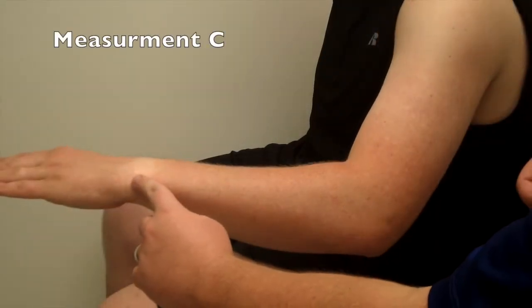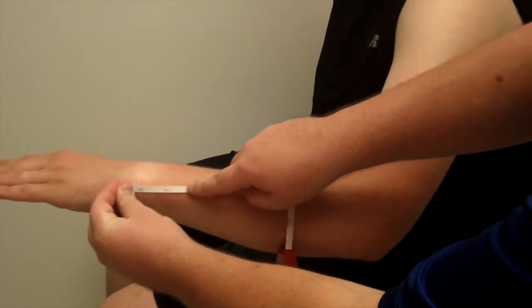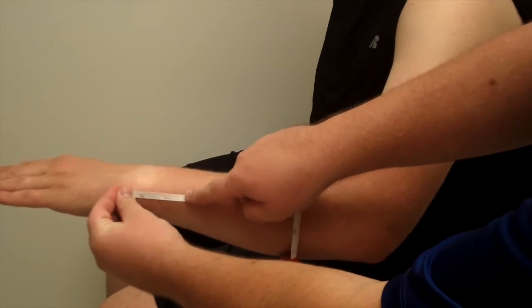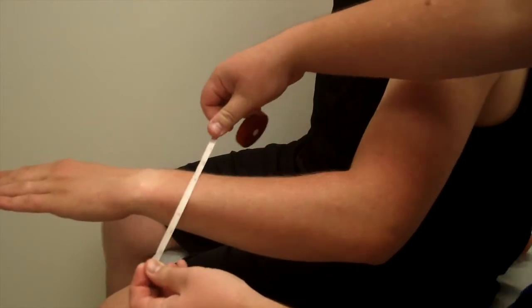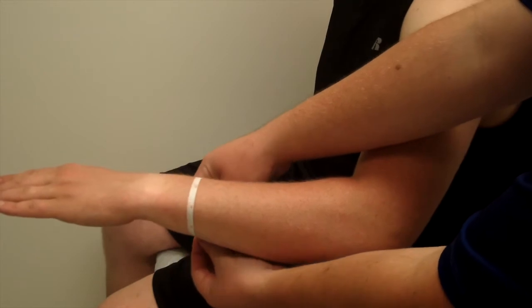Measurement C. Find the ulnar styloid, which is the wrist bone on the pinky side of the wrist, and measure one and a half inches proximally. From that point, take a circumferential measurement.